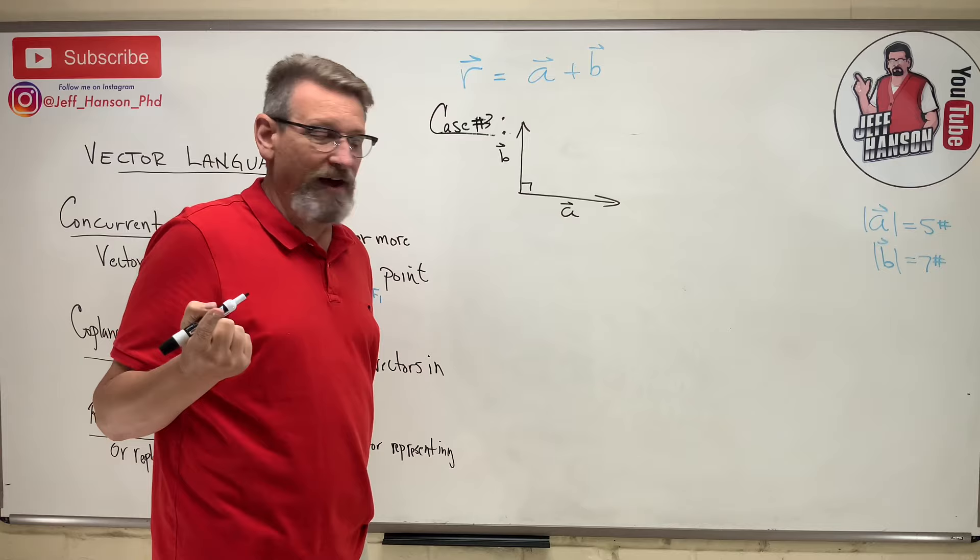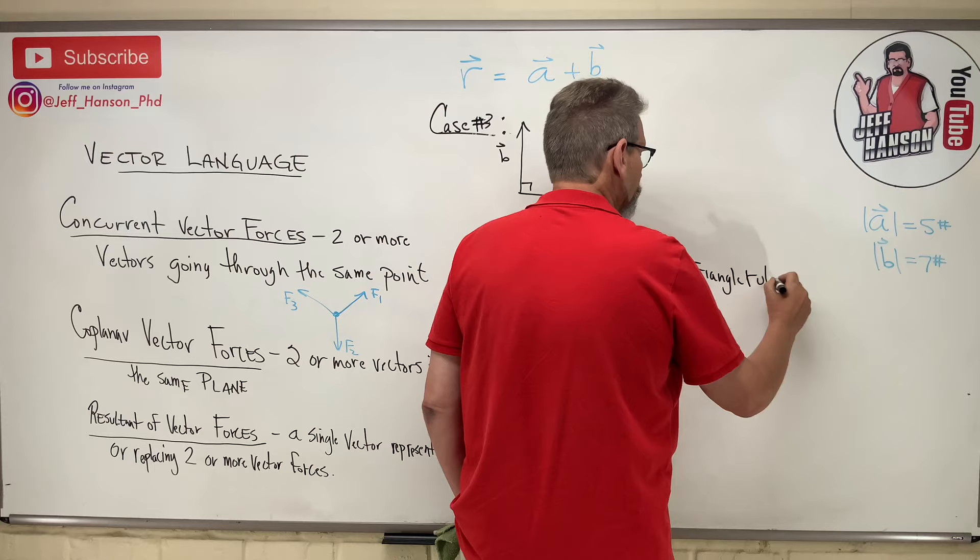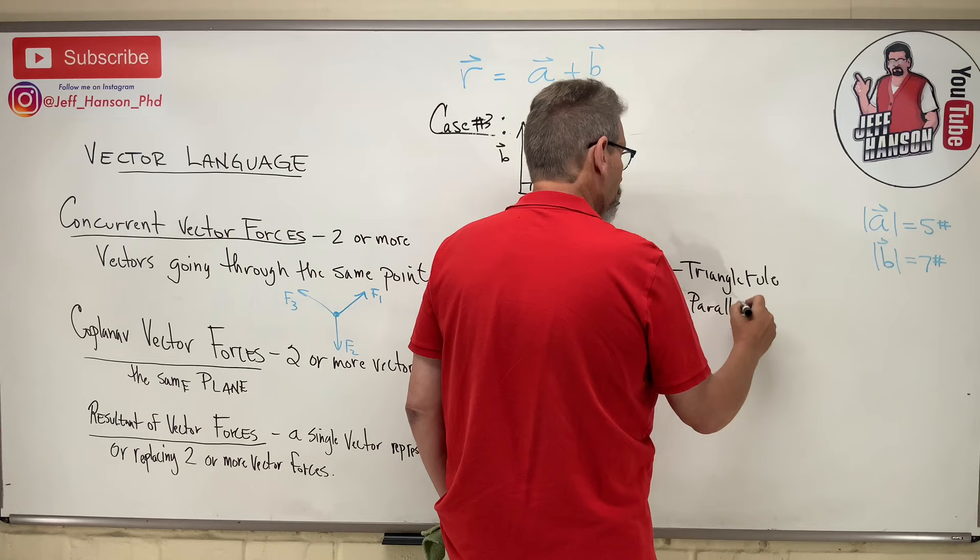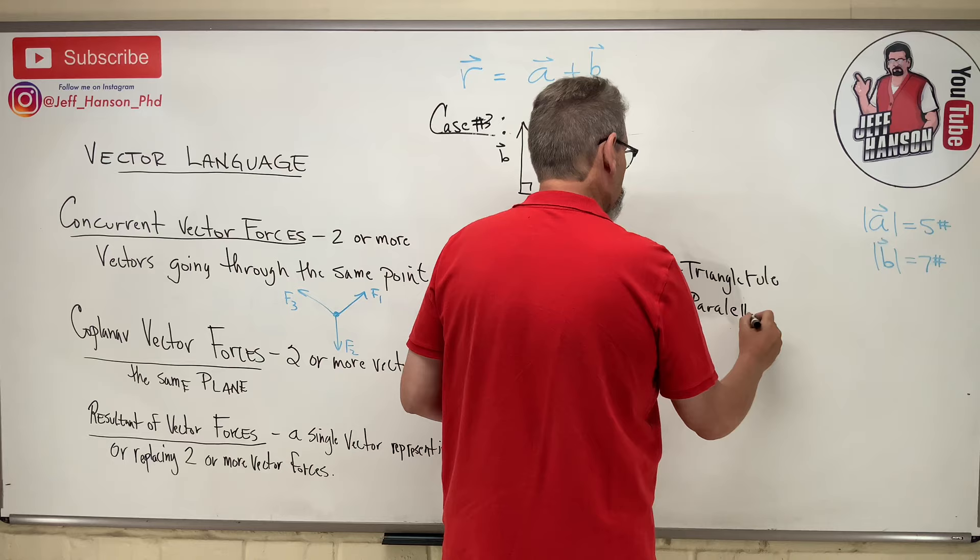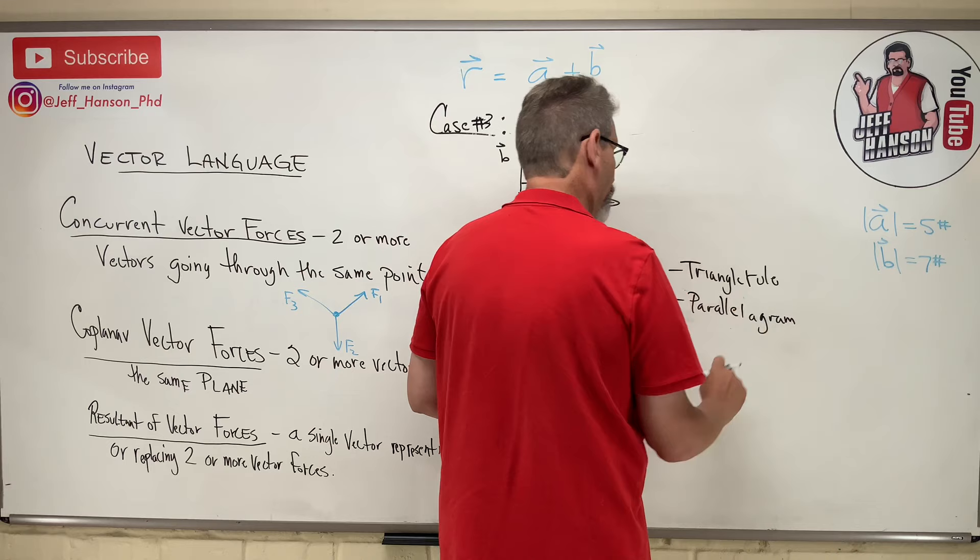So how do I do this? How do I add two vectors if they're not on the same line of action? We have to use a little trick here. We have to go back and remember this, the triangle rule. Now, you might remember the triangle rule, but you might not. You might remember a parallelogram, parallel, I can't even spell that, parallelogram rule.